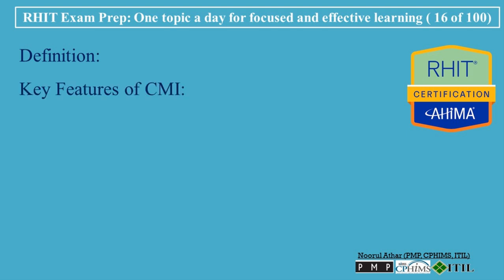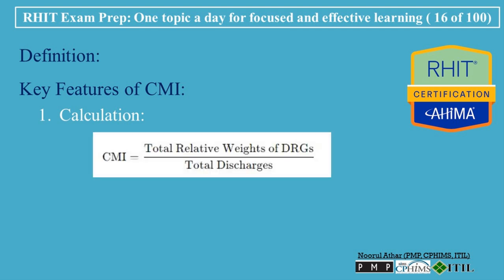Key Features of CMI. 1. Calculation: CMI is calculated by taking the total of the relative weights of all DRGs assigned to patients, and dividing it by the total number of discharges in a given period. The formula is: CMI (Case Mix Index) equals the total relative weights of diagnosis-related groups (DRGs) divided by the total number of discharges. Each DRG has an assigned relative weight based on the average resources required for patients in that group. Higher weights indicate more complex cases that typically require more resources and higher costs.